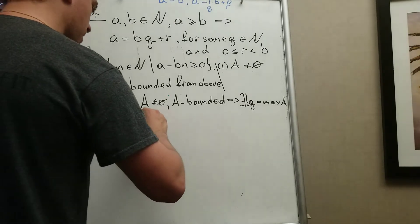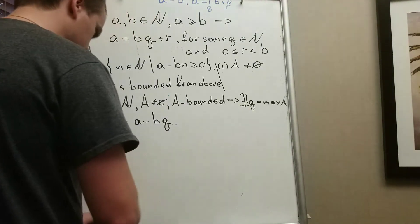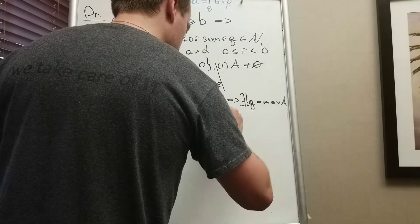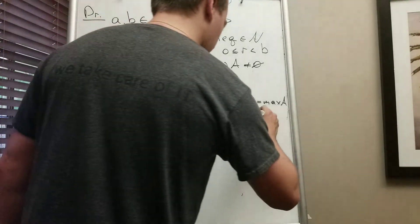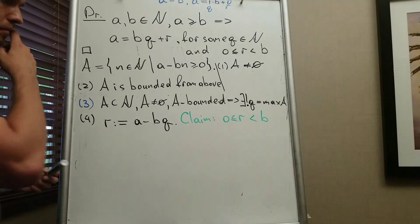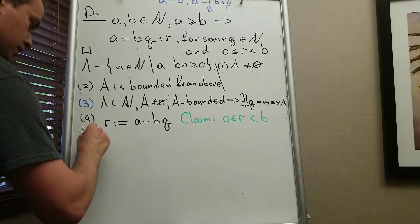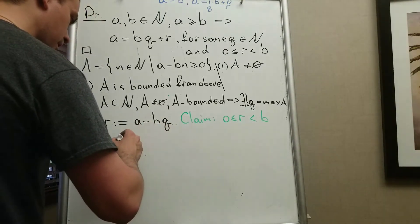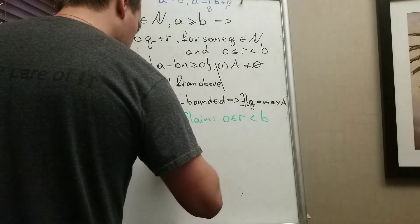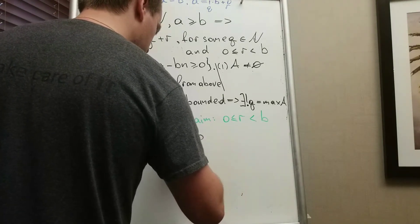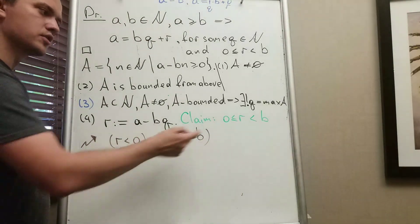Now I define R = A − BQ. My claim is that R satisfies 0 ≤ R < B. I'm going to prove this by contradiction. The negation of the claim means either R < 0, or R ≥ B. I'll show both cases lead to a contradiction, so the claim must be true.